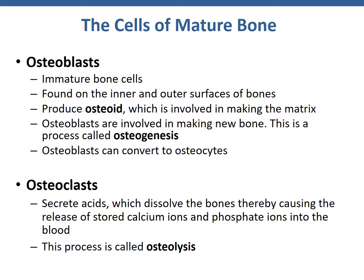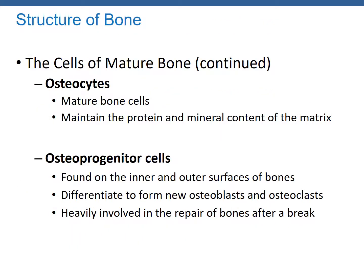Osteoclasts are antagonistic to osteoblasts — clasts are destroyers. They secrete acids which dissolve the bone, causing the release of stored calcium ions and phosphate ions into the blood. This process is called osteolysis. Osteoprogenitor cells are the youngest form of cells, just beneath osteoblasts, found on the inner and outer surfaces of bone. They differentiate to form new osteoblasts and osteoclasts and are heavily involved in the repair of bones after a break.